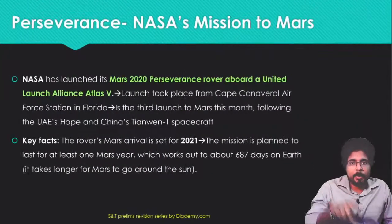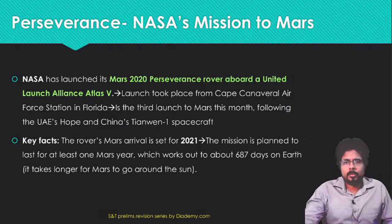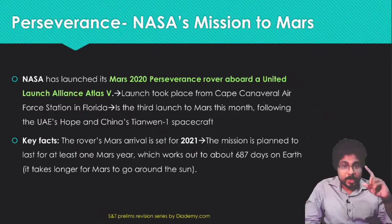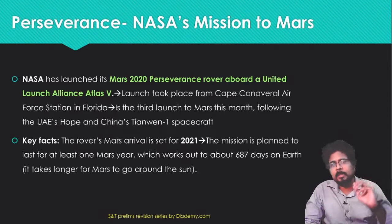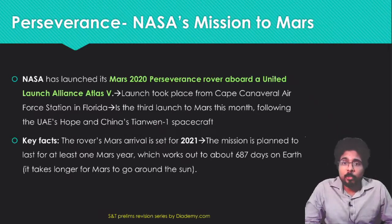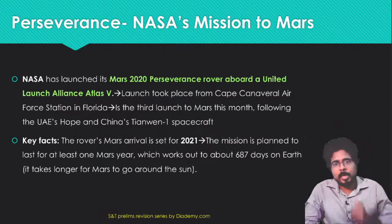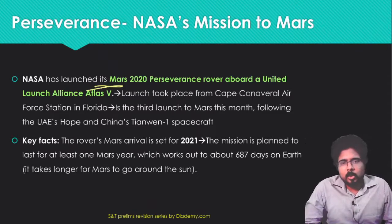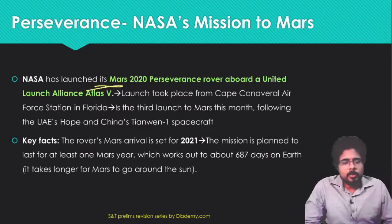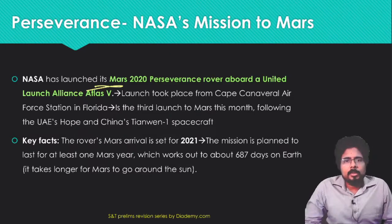The Hope Mission is the mission of the United Arab Emirates to Mars. Next is Perseverance, which is NASA's mission to Mars. We have seen Hope from UAE, Tianwen-1 from China, and now Perseverance from NASA — all three were launched in 2020. Perseverance is the Mars 2020 project and has a rover aboard, launched using the Atlas V rocket from Cape Canaveral Air Force Station in Florida.